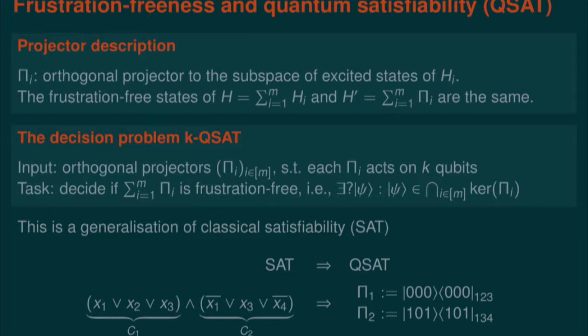This is actually a generalization of the classical SAT problem. Consider a classical instance where we have clauses. Each clause sets some restriction on the Boolean variables it talks about. For example, the first clause will say that x1, x2, and x3 should avoid the all-zero configuration. When I transform it to a projector term, I penalize the state which is all zero on these qubits. Similarly, another clause tells me to avoid a particular assignment, which translates to a corresponding penalty projector. It is easy to see that this arising system is frustration-free exactly when the classical instance is satisfiable.